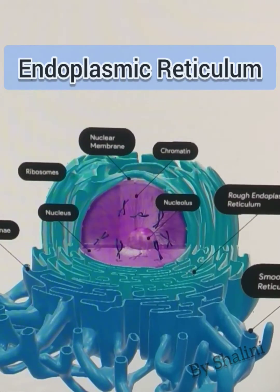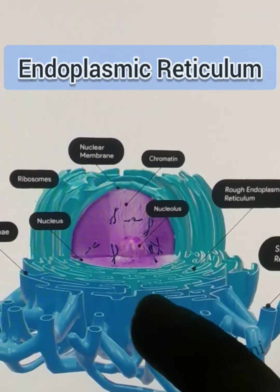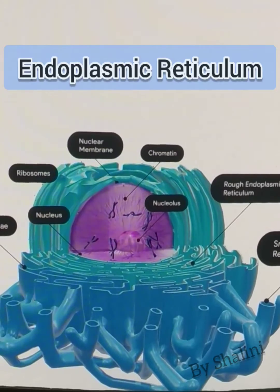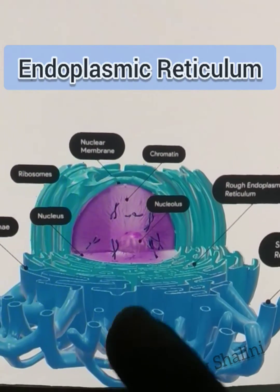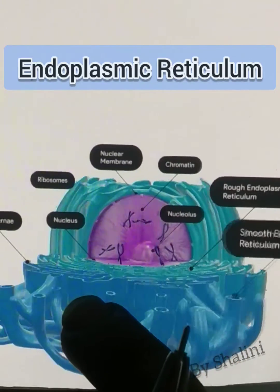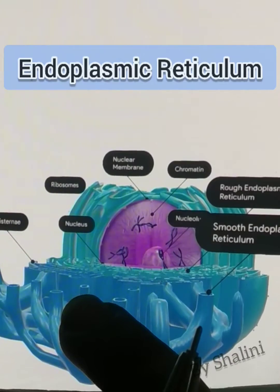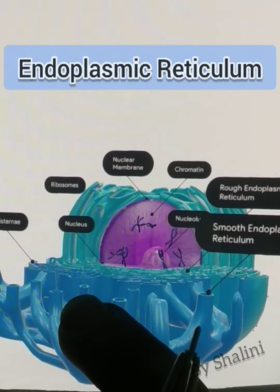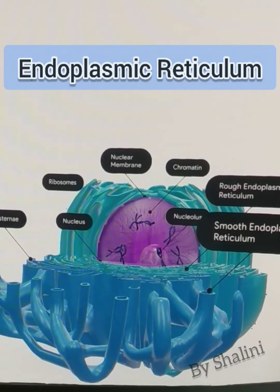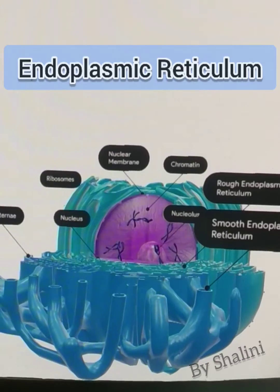In this video we are going to see the detailed 3D version of endoplasmic reticulum. The endoplasmic reticulum is a cell organelle which can be seen in both plant and animal cells. KR Porter was the first person who coined the term 'endoplasmic reticulum'.